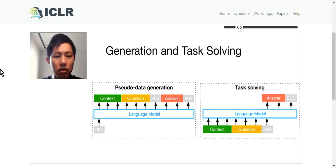As mentioned, we want our model to generate pseudo-data and solve tasks simultaneously. In pseudo-data generation, given the special generation token, our model should output context-question-answer sequence. In task-solving, given context and question, our model should output answer.